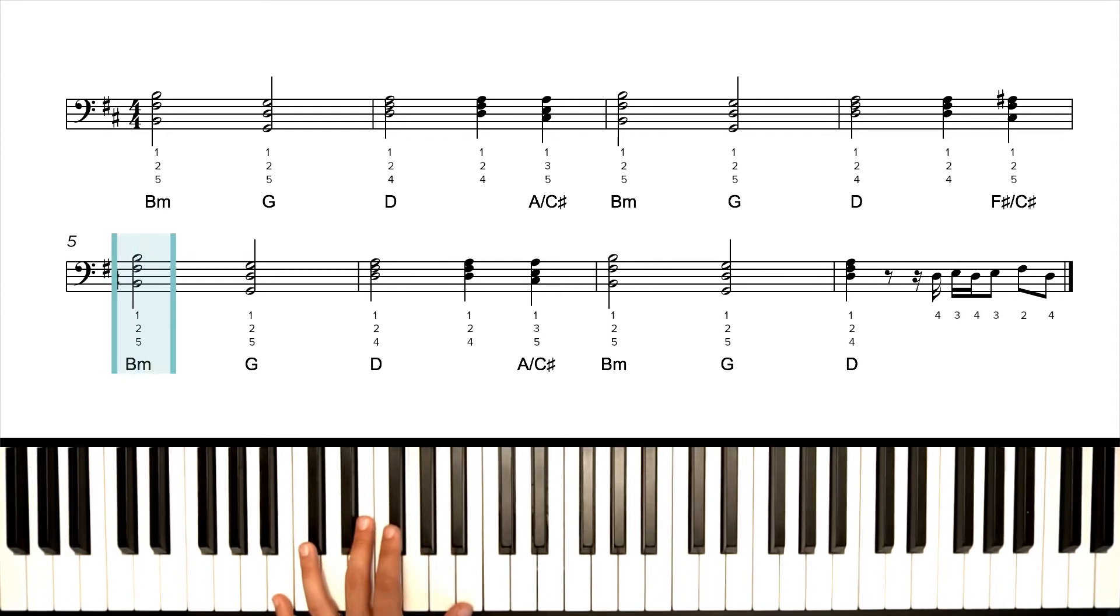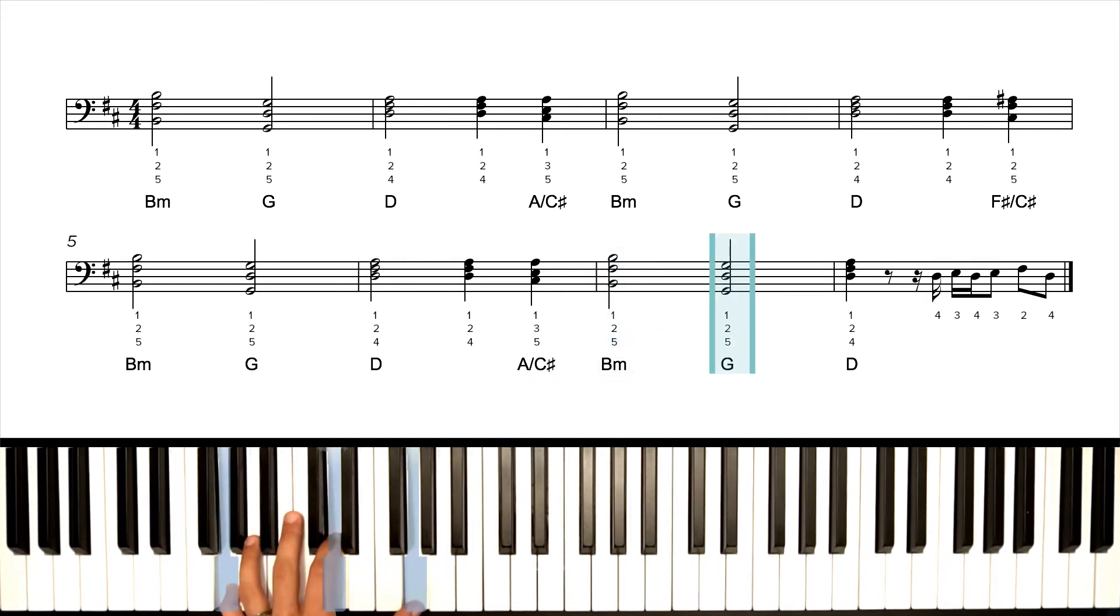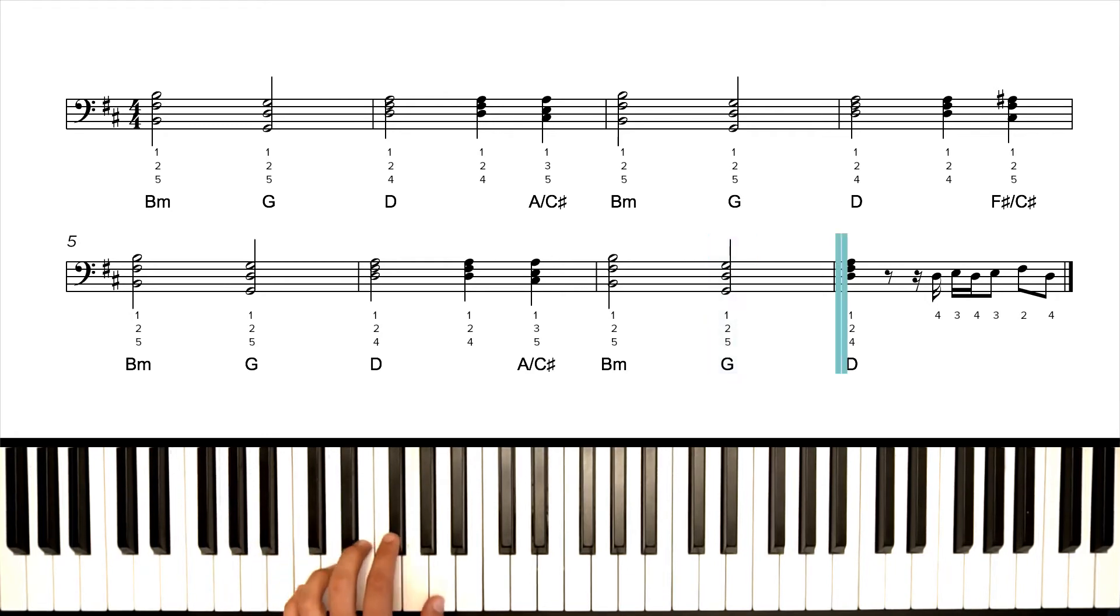Next line down, same thing as the beginning. B minor, G, root position D, and then A over C sharp. Fourth phrase starts the same. B minor, fifth and an octave. G, fifth and an octave. Root position D. But this time, we don't play a final quarter note chord. We're actually going to join the right hand melody with this little riff.